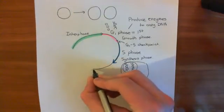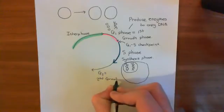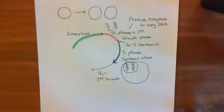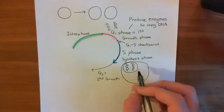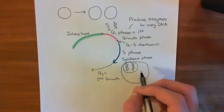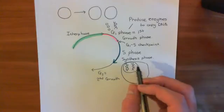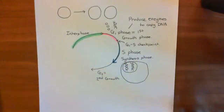Next, you go through what's known as G2, the second growth phase. This is where you produce more of the proteins that both daughter cells are going to need, since you're about to split in two and need double the protein. You also produce the proteins specifically necessary to split the nucleus — the process of mitosis — and to split the cell itself — the process of cytokinesis.